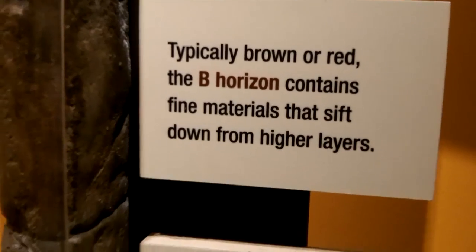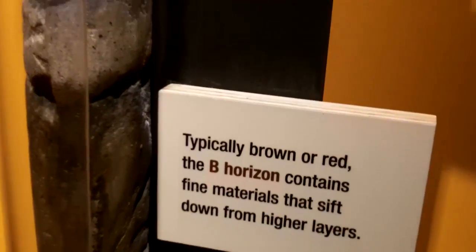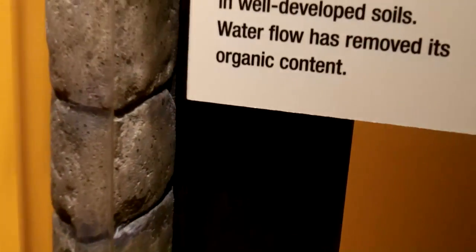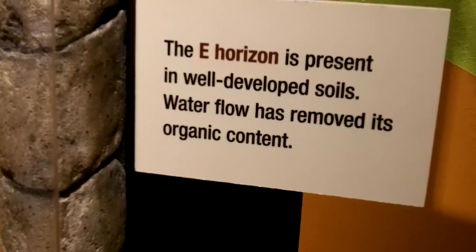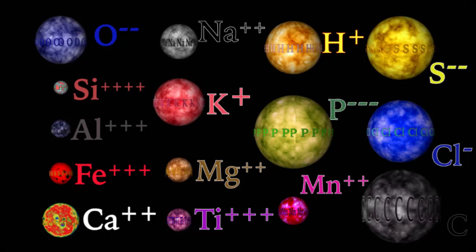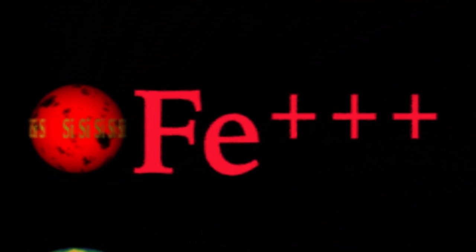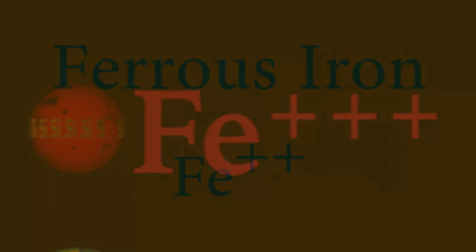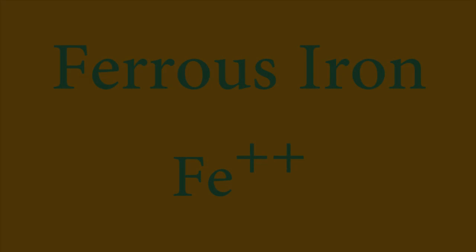With water saturating the lower part of a soil stack, oxygen tends to deplete there, but above the saturated portion of the soil, air keeps the oxygen levels high enough to change the basic chemistry of one of the most common elements on earth: iron. With no oxygen, iron becomes chemically reduced, and we call it ferrous iron, which tends to display green to gray colors in rocks.